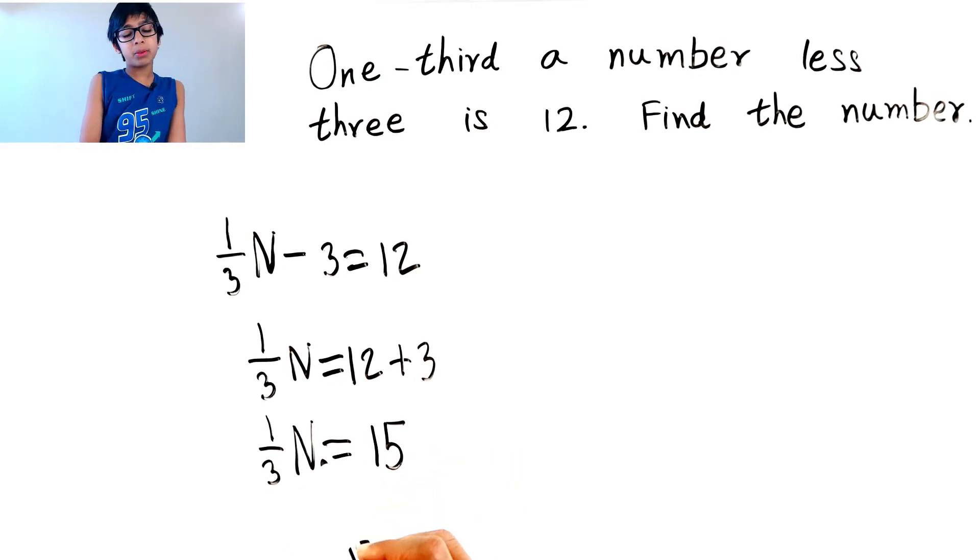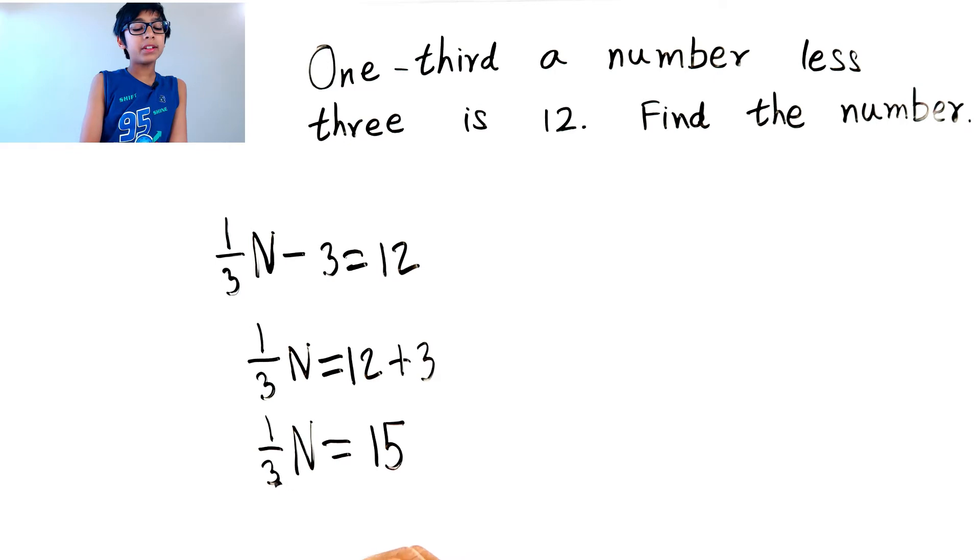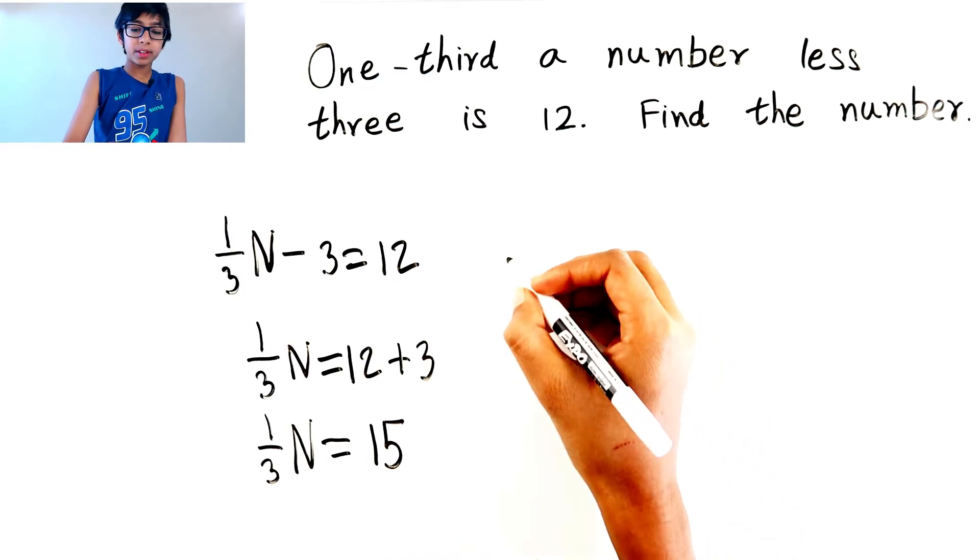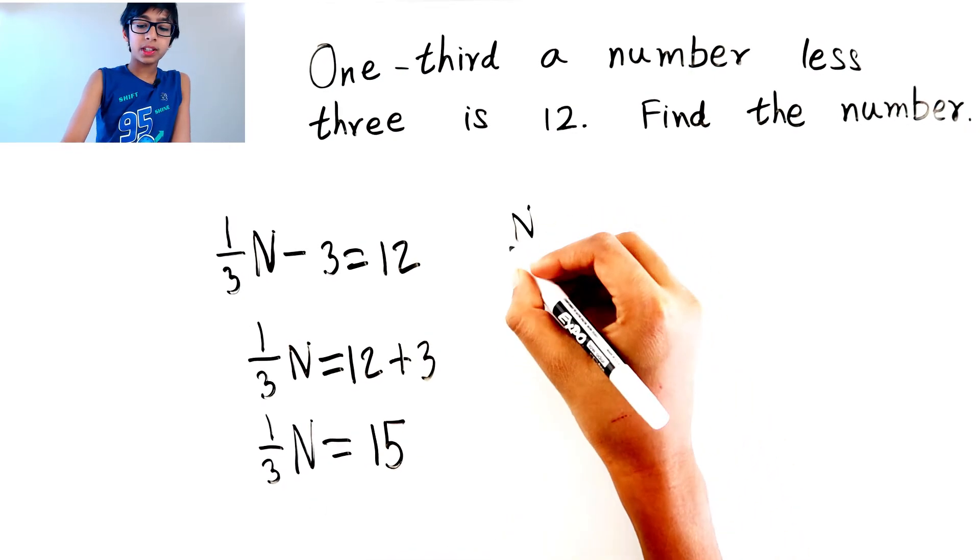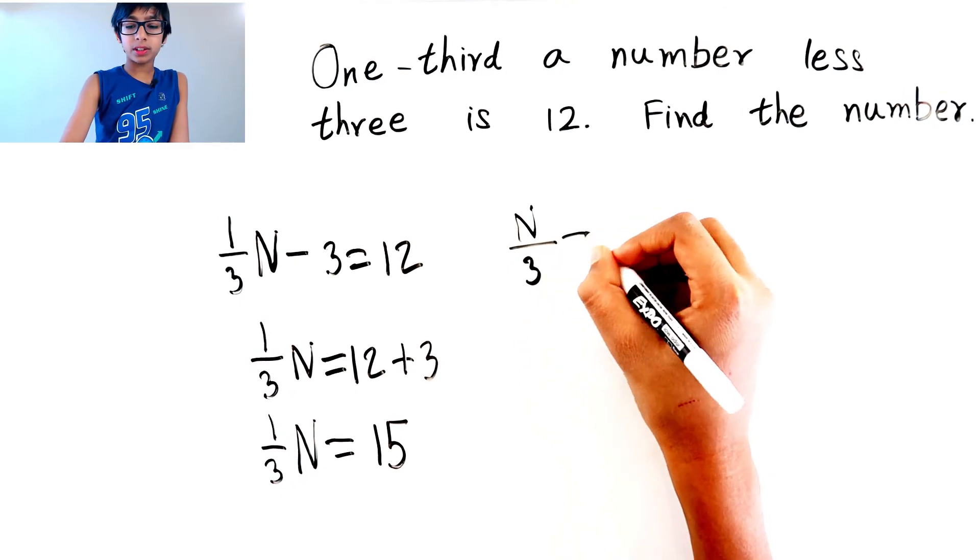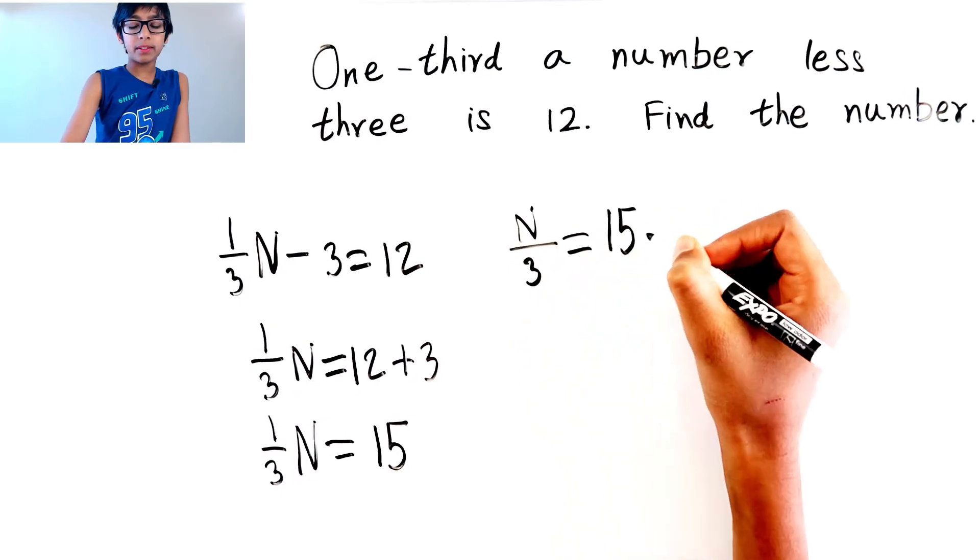One-third n can be written as n divided by 3. So n divided by 3 equals 15.